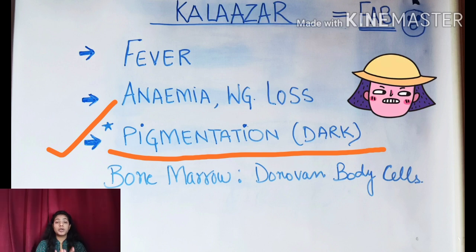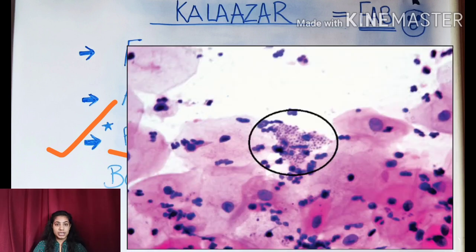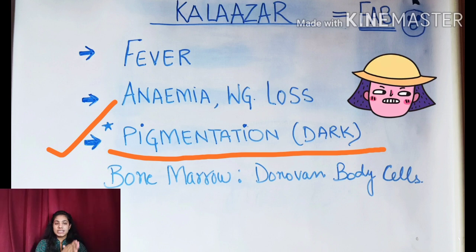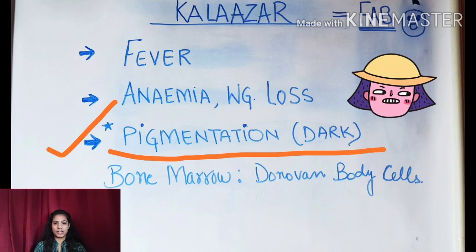The most important finding in kala-azar is that when we do a bone marrow culture test, Donovan bodies will be seen microscopically. These are the features that help us differentiate kala-azar from hepatomegaly — the primary cause will be kala-azar and the secondary condition will be hepatomegaly.